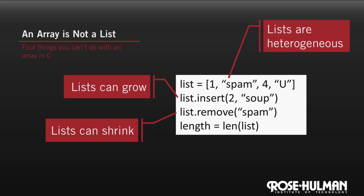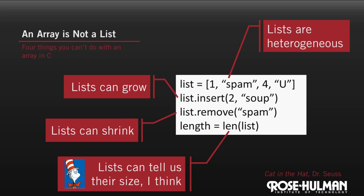Arrays in C have a fixed length. Unlike lists, we can't easily make an array longer or remove from the middle of an array. And as we've seen, unlike lists, arrays don't store their own size.